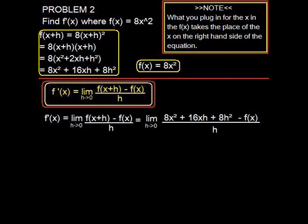Okay, so substituting in f(x+h) into the equation, we obtain the limit as h approaches 0 of (8x² + 16xh + 8h² - f(x)), all of it divided by h. Alright, so now we're going to plug in our f(x).